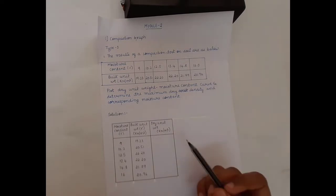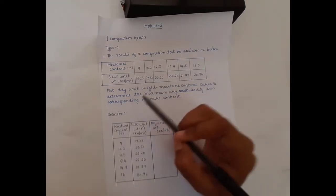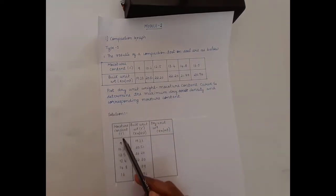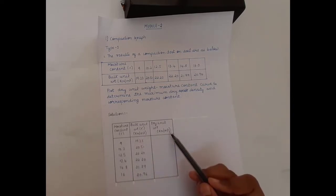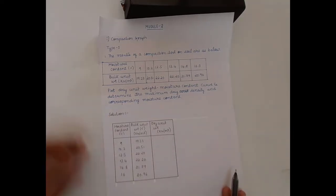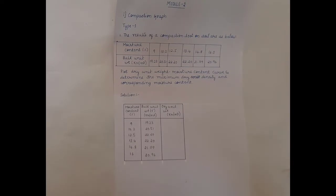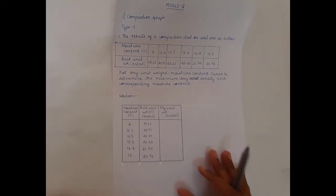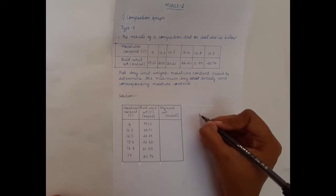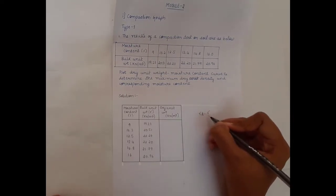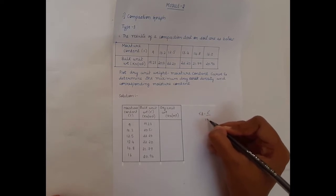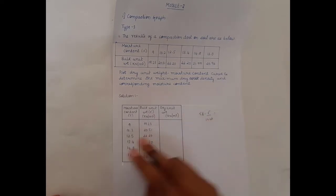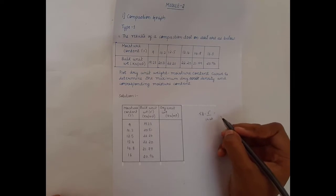We need to calculate dry unit weight to plot the graph. They have given moisture content and bulk unit weight, and using these two values you need to calculate the dry unit weight of the soil. The formula is: gamma_D equals bulk unit weight divided by (1 + w). For each and every trial you need to calculate the dry unit weight.